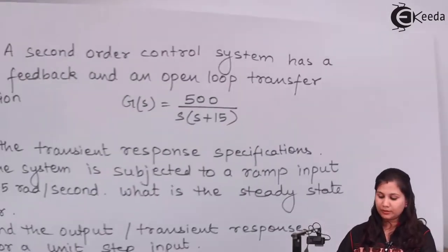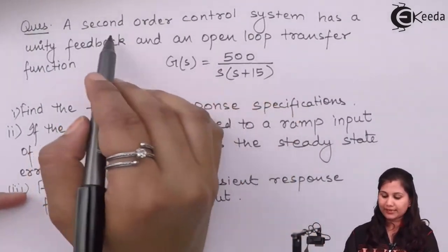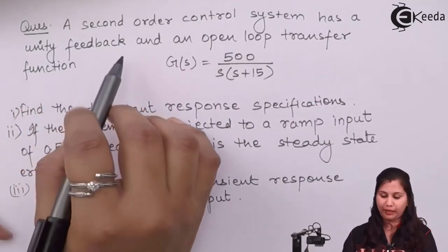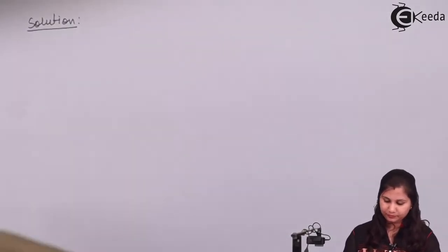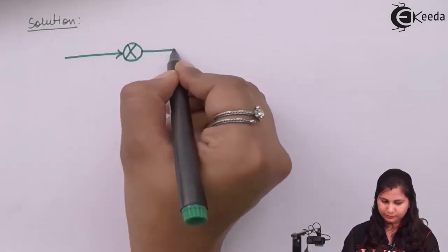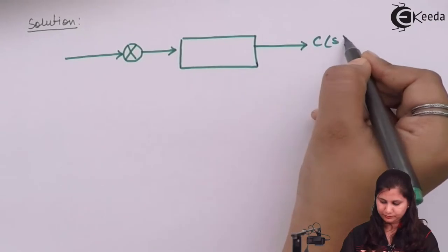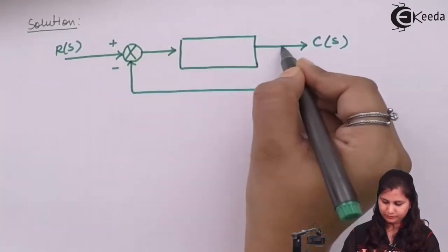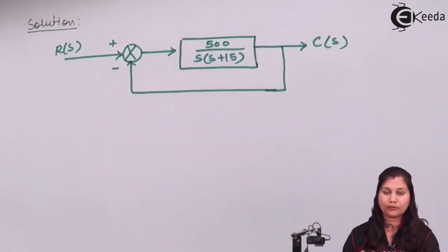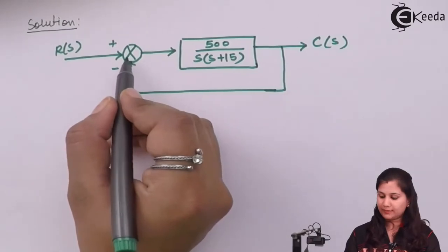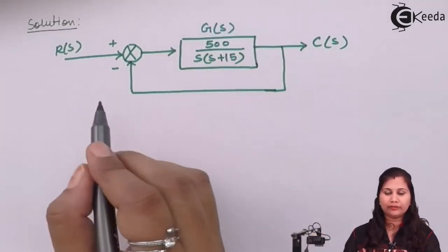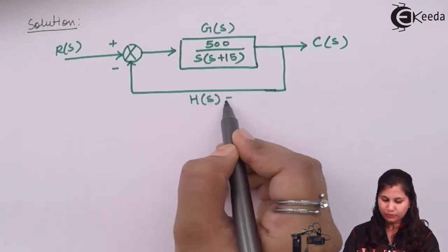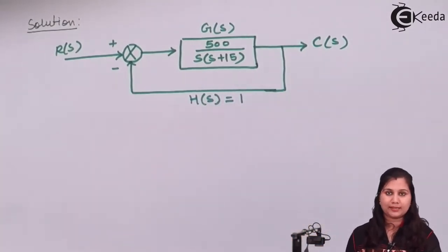We are given the open loop transfer function for this system and it is a second order control system having unity feedback. First we will draw the block diagram for this system. R(s) is the input, C(s) is the output, and G(s) is the open loop transfer function. Since it is a unity feedback system, H(s) equals 1.